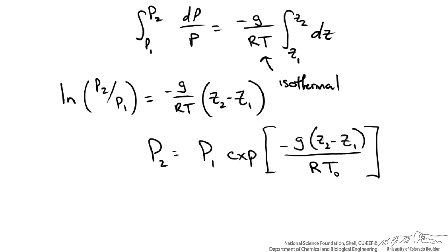This relates our pressure at some point 2 to our pressure at point 1, our change in height, our gravitational constant, our gas constant. Again we are doing this for an ideal gas. And some temperature we are using for the fluid that we are examining.